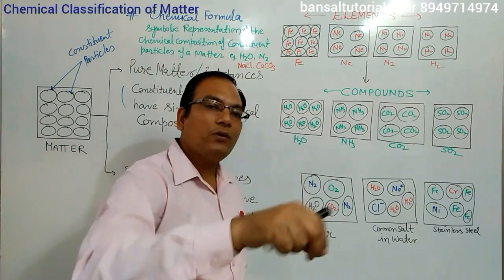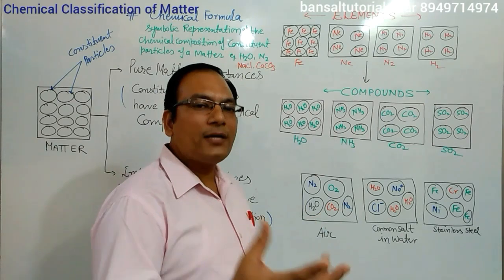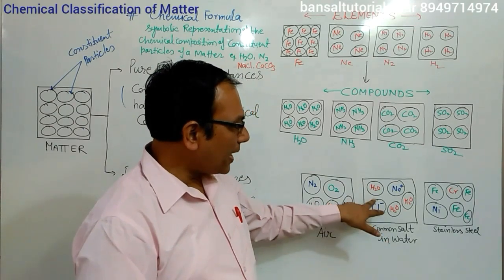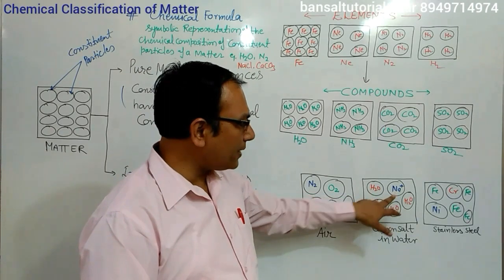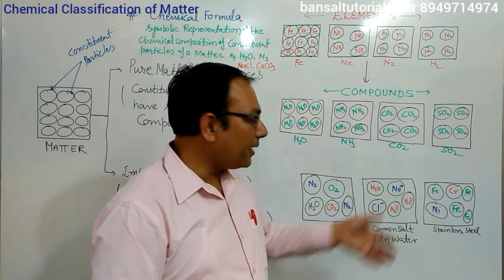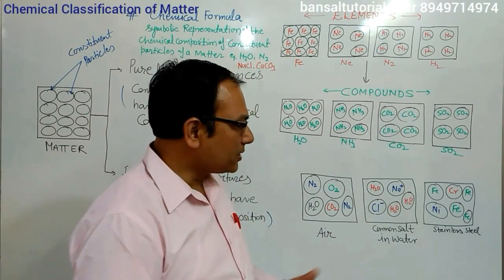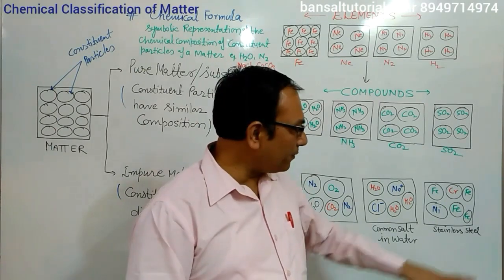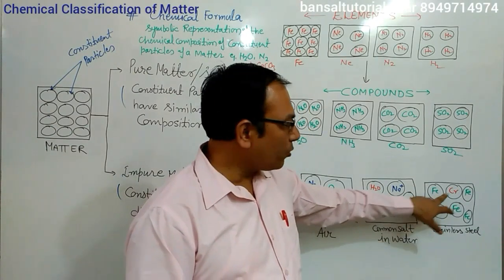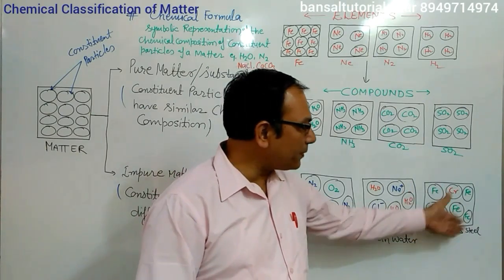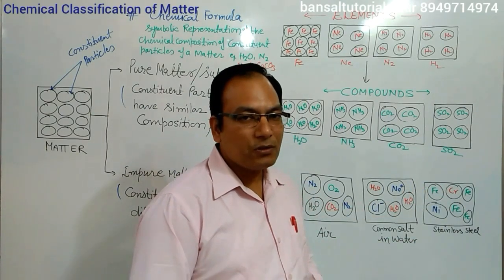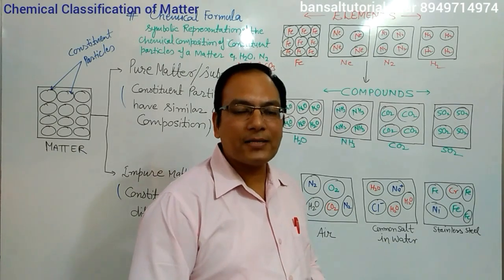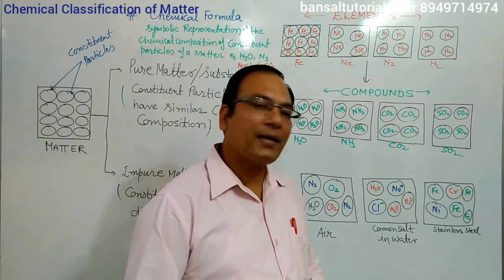In the same way, when we dissolve common salt in water — common salt is a pure substance and water is a pure substance — but when we mix them, the resultant matter has particles of water, particles of sodium, and particles of chlorine. So this becomes a mixture of different kinds of particles. Steel, which is an alloy — alloy is a mixture of metals — steel is composed of iron, chromium, and nickel. Again, different types of particles are present having different chemical compositions. Pure matter is composed of same kind of particles and impure matter is composed of different kinds of particles.